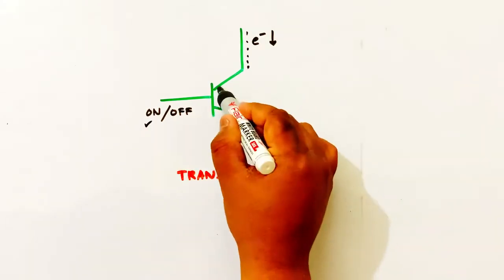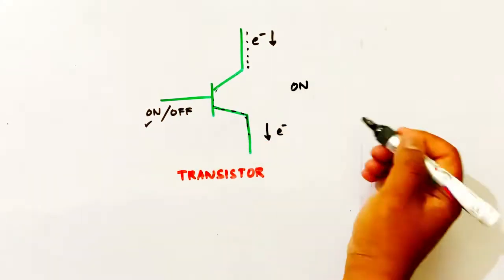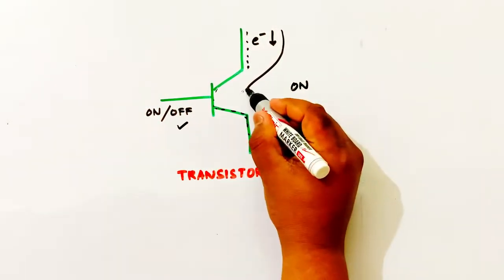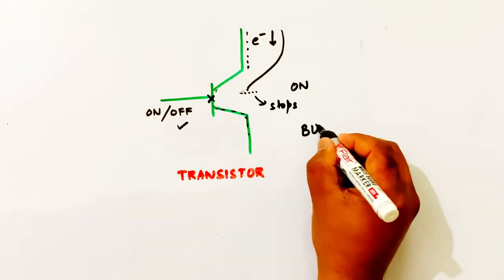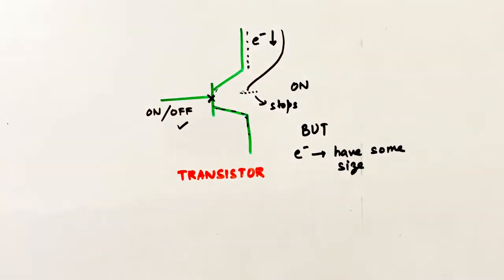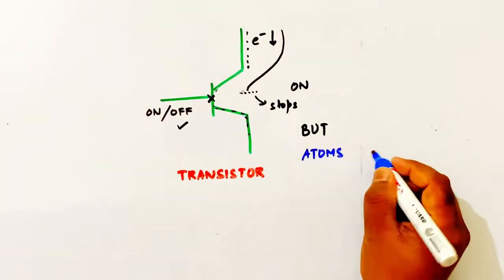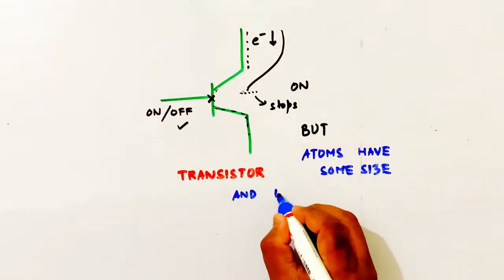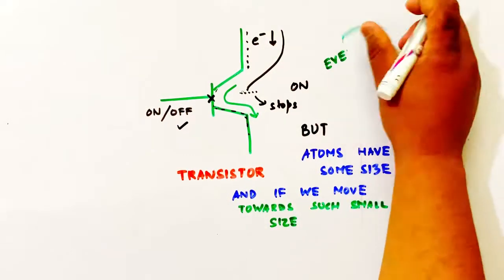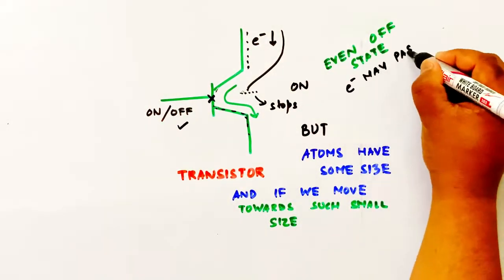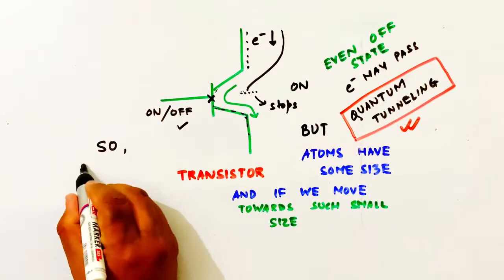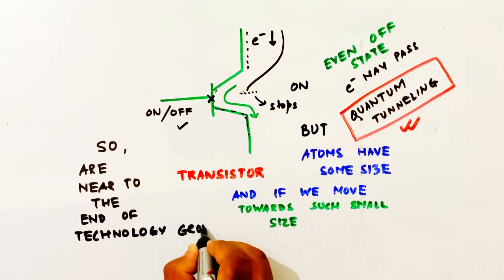This is a basic transistor design. When we are on the circuit and current is on, we are on the main line. When current flows, the transistor is on. When we are off, the current is blocked — this is the basic transistor. We know that electrons and atoms are physical elements with a finite size. As we shrink transistors to atomic scale, the electrons are still able to pass even when switched off. The current is able to pass — this phenomenon is quantum tunneling.